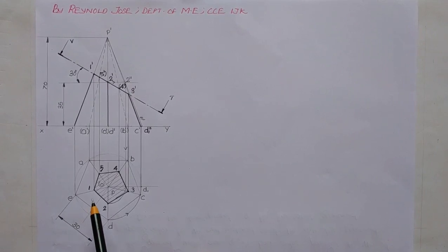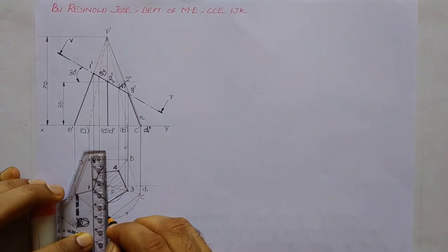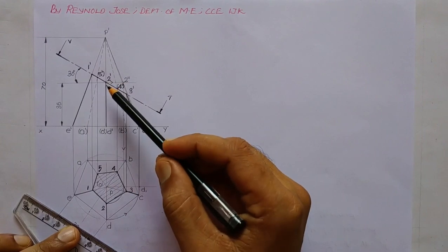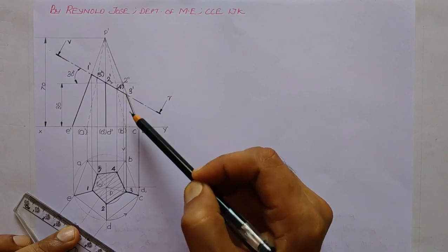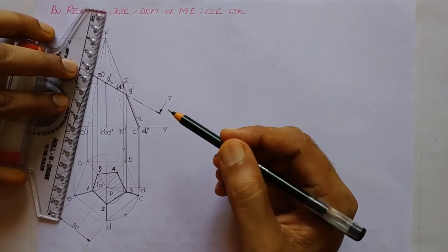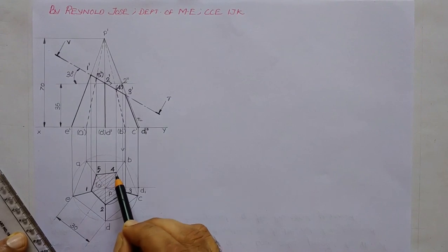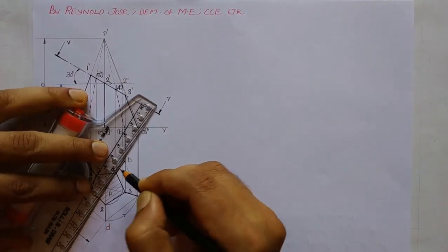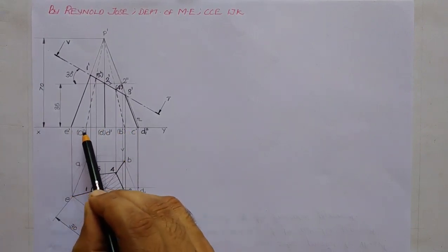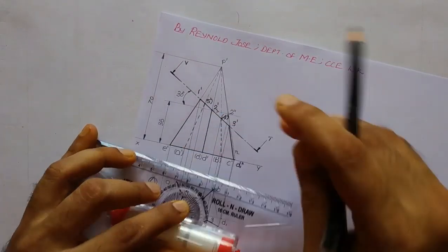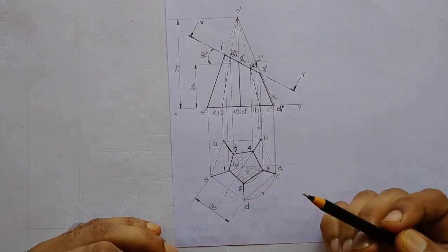Correspondingly in the top view we draw lines 1-E, 2-D, and 3-C. On the rear side of the front view we have 5'-A' and 4'-B', which are drawn using dashed thick lines. In the top view we join 5-A and 4-B. In the front view the whole base is remaining and not sectioned off, so we draw a thick line from E' to C'. Likewise in the top view, edges AB, BC, CD, DE, and EA are remaining and drawn using thick lines.